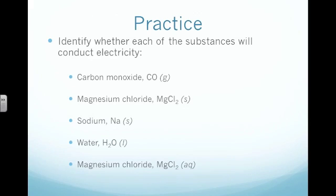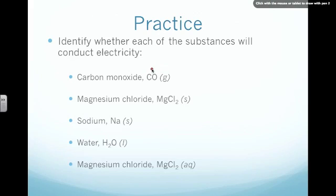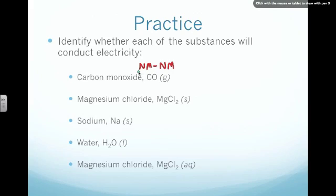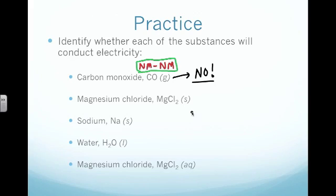Here's some practice. We want to identify whether each of the substances will conduct electricity. The way we practiced this in class was to look at each of the individual atoms inside the compound and determine whether they were metals or nonmetals. We start with carbon monoxide. We look at each individual element: carbon is on the right-hand side of the periodic table, so it's a nonmetal. Oxygen is also on the right-hand side of the staircase, so it's also a nonmetal. Since we have a nonmetal with another nonmetal, it will not conduct electricity because it has no metals inside.